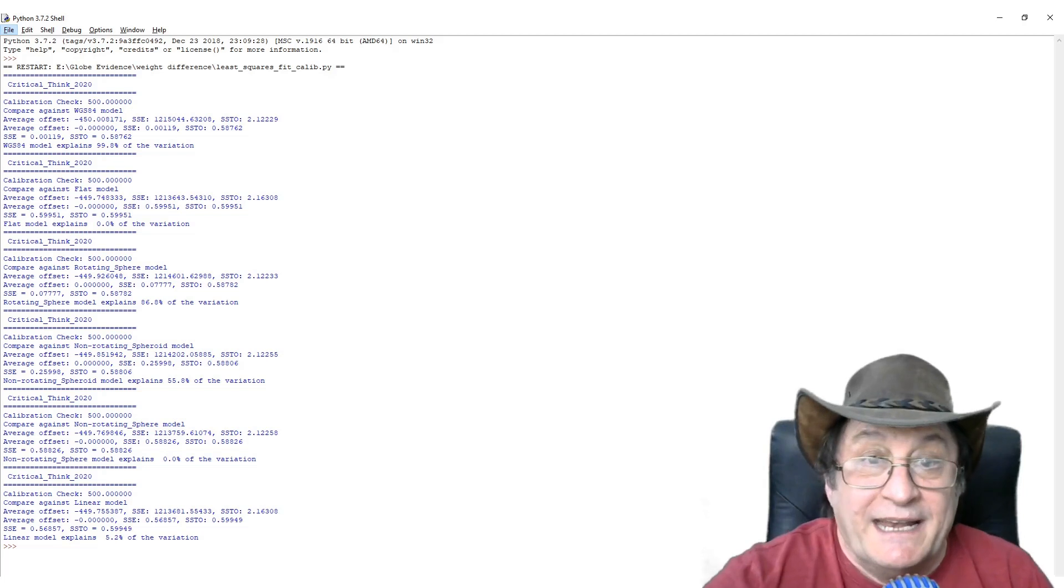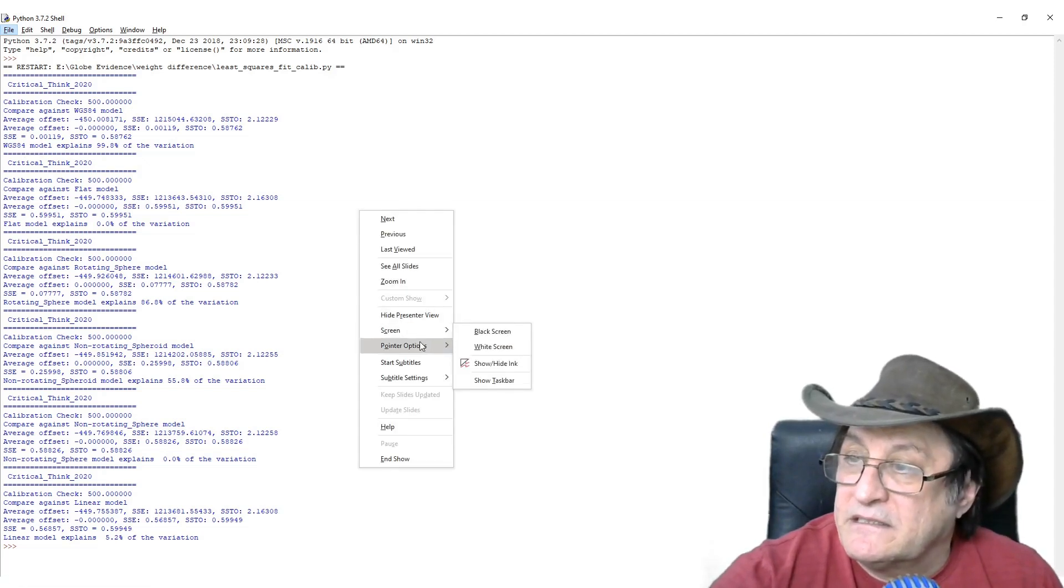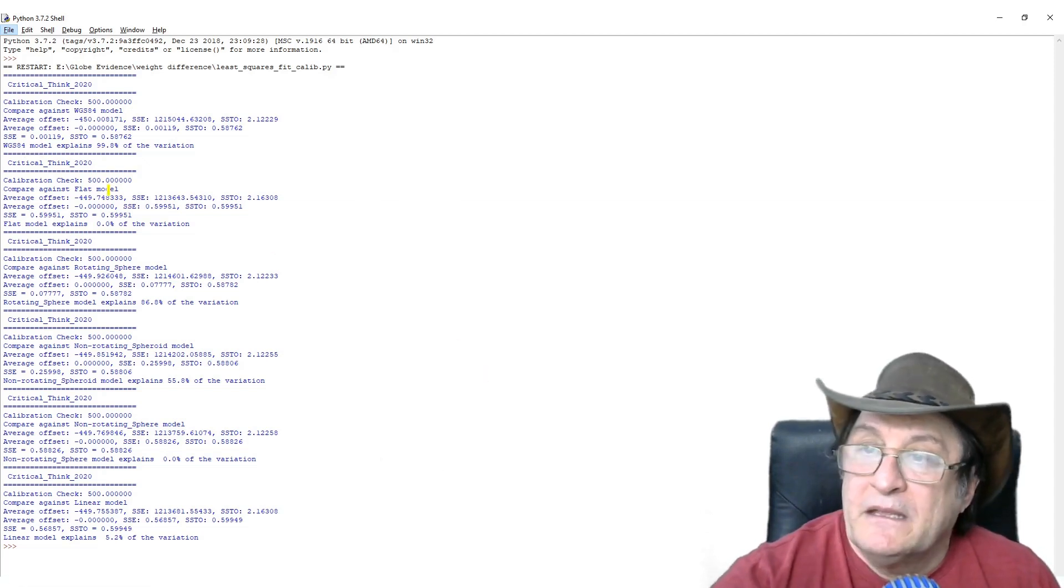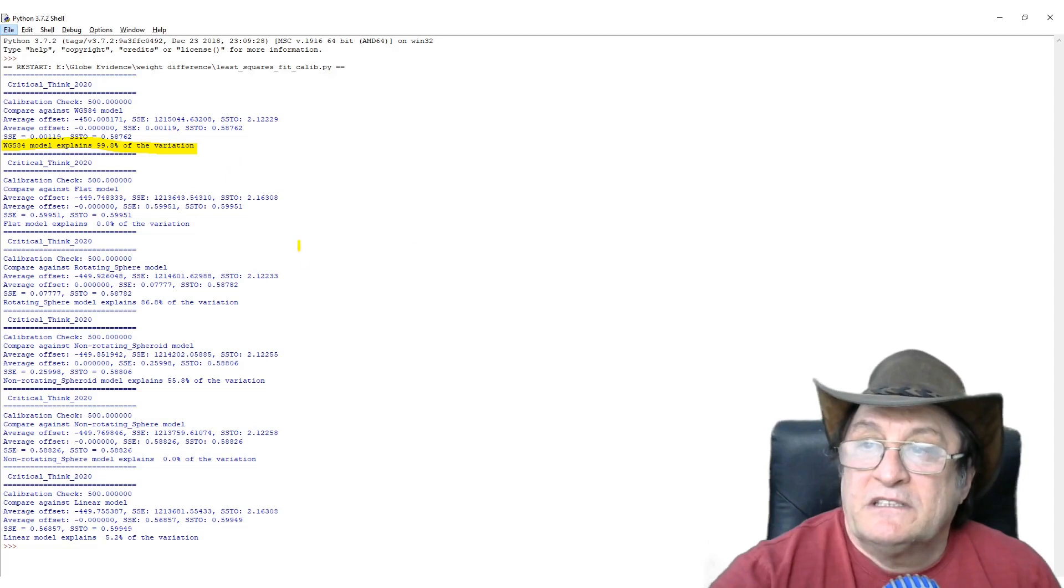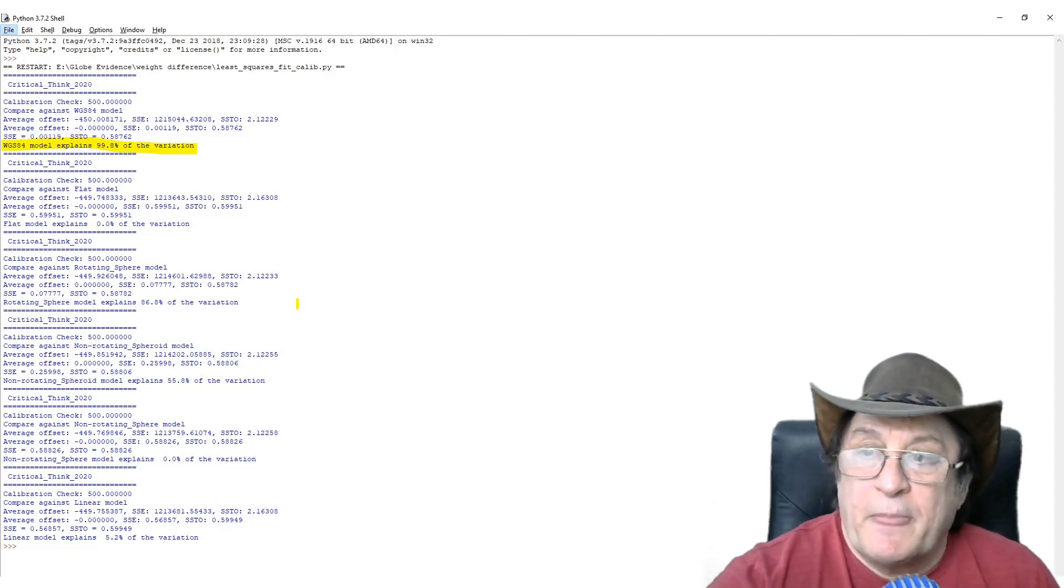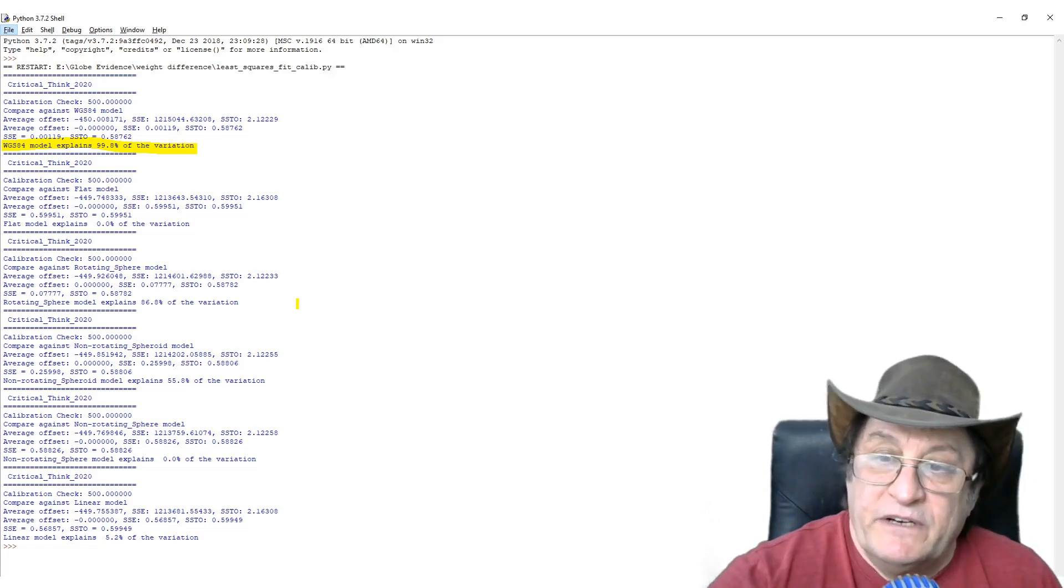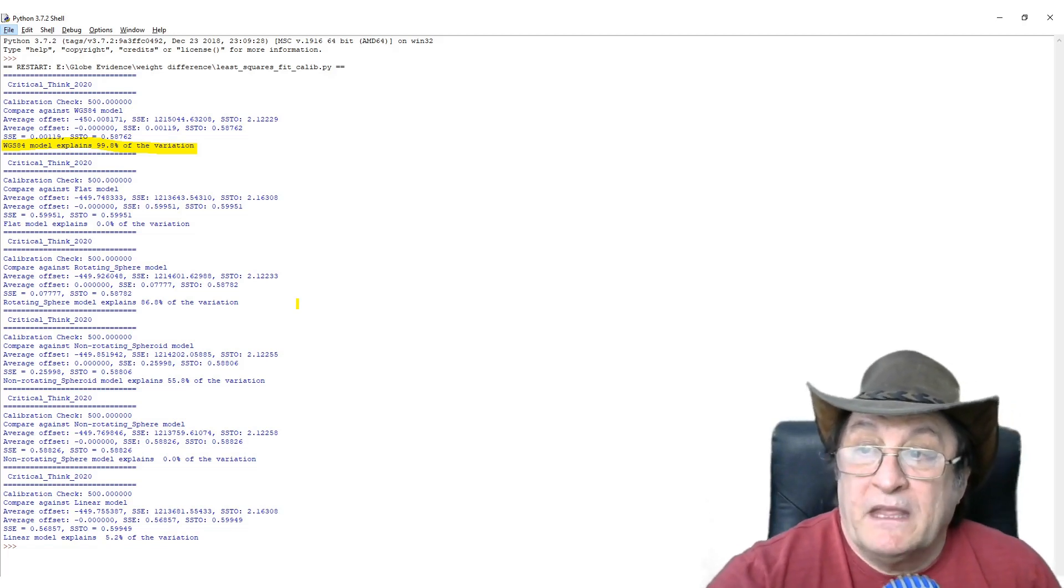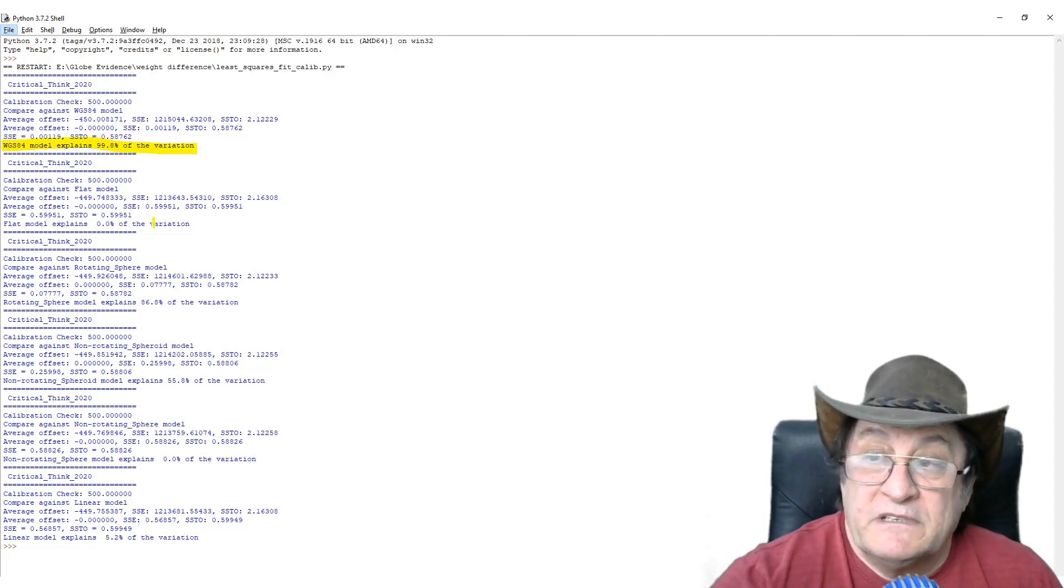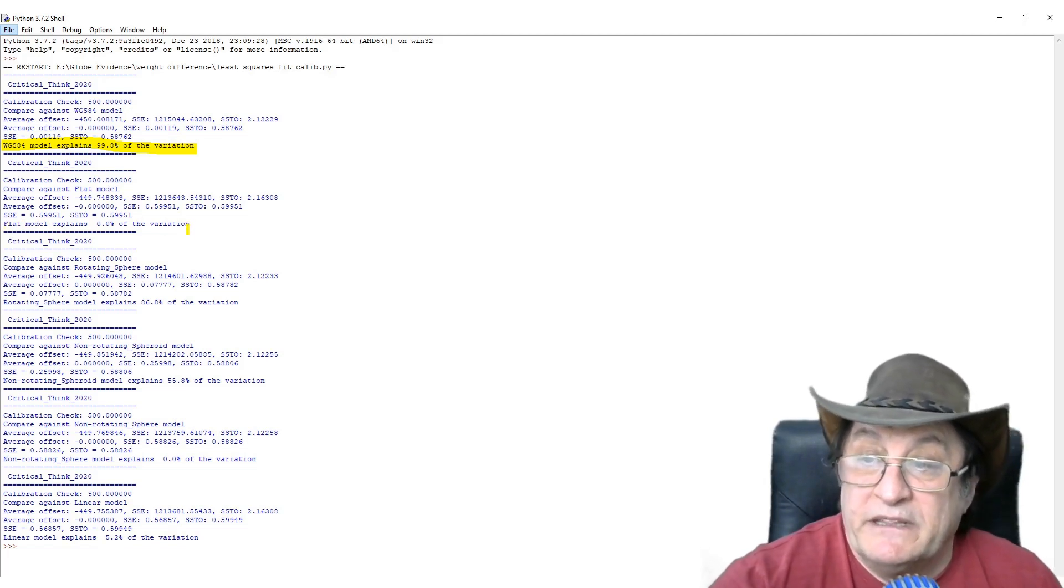But the thing you've got to look here is, let's get some pointer options, highlighter. So this one here, just my measurements with more accurate scales, the WGS84 model explains 99.8% of the variation in weight versus latitude. It's very significant. That's a very high number. That's a very close correlation. And the thing here, the flat model cannot explain this variation. There's nothing in the flat earth model that can explain that variation.